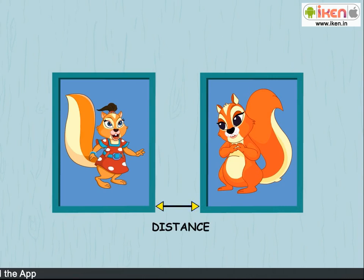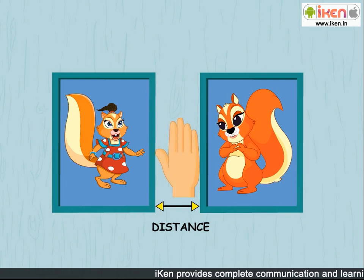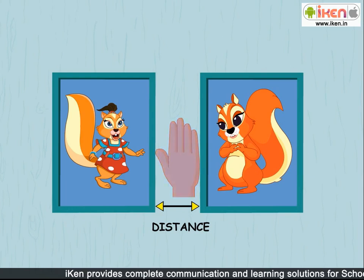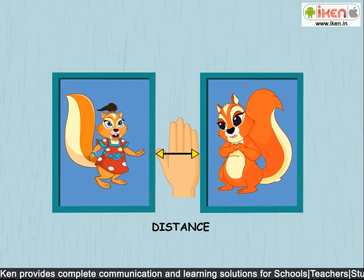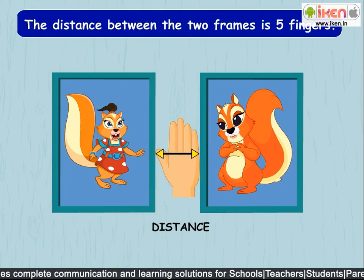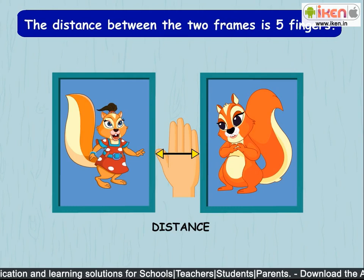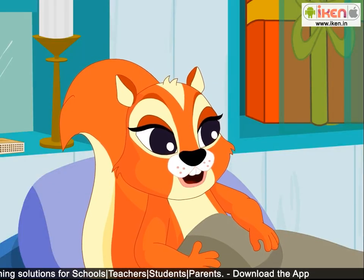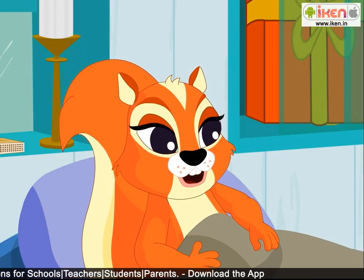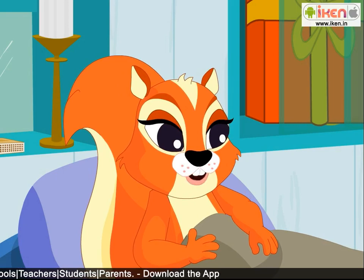So is this the distance that we have to measure now? You are right, Bunny. Now observe how I measure the distance between the frames with my fingers. The thumb touches Judy's frame — so the two frames are at a distance of five fingers from each other. Isn't that simple? Now we can easily know the distances between things.